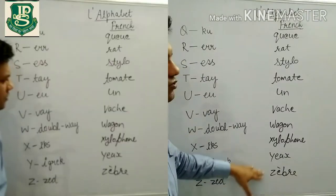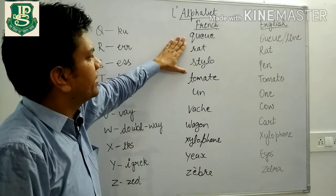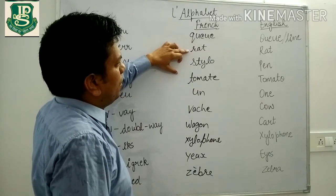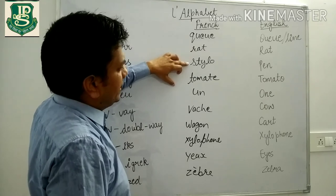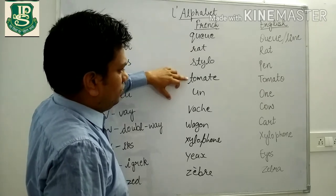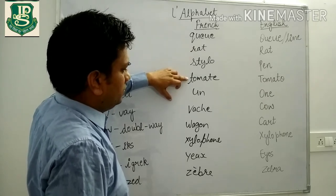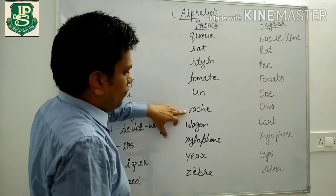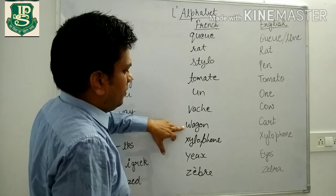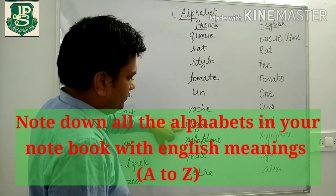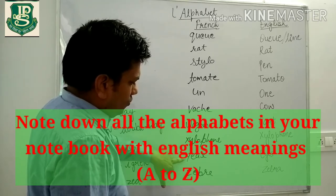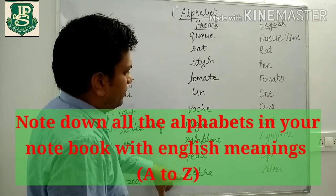So students please practice at home and repeat after me. Q, rouge, Stilo, Tomat, un, vache, wagon, xylophone, yeux, zebra.